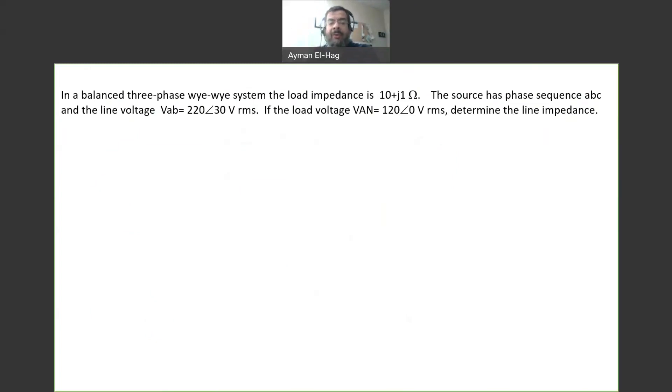The line voltage VAB is equal to 220 angle of 30. The load voltage VAN, between the line and the neutral, so this is the phase voltage, is equal to 120 angle of zero. While at the source we are given the line-to-line voltage, at the load we are given the phase voltage. We want to find the line impedance.